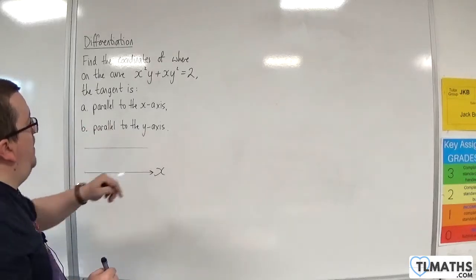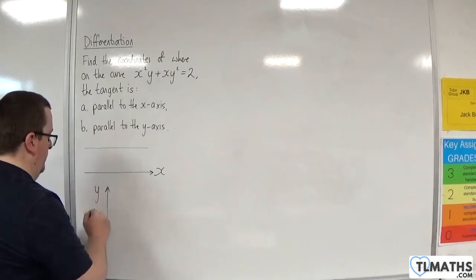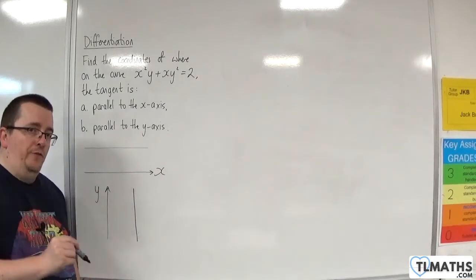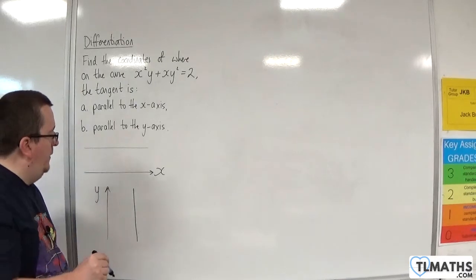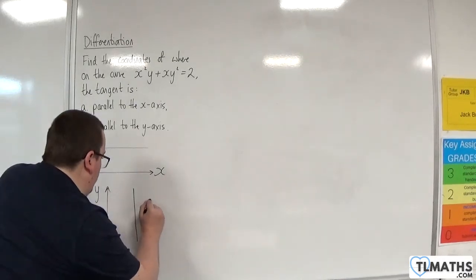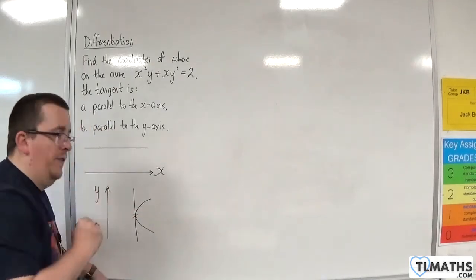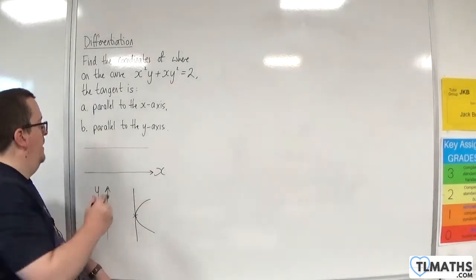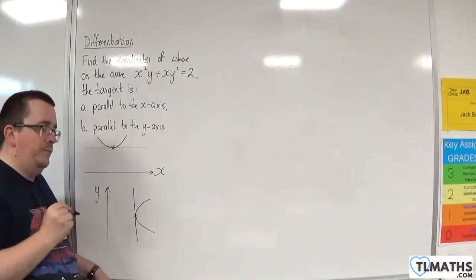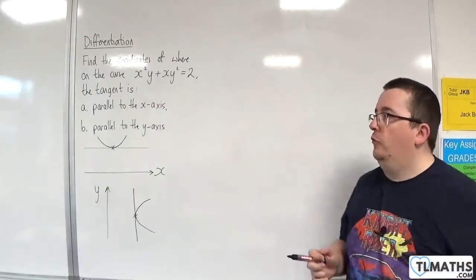And then if it is parallel to the y-axis, then the gradient is infinite, in which case it would look something like this - the curve comes in and does that. So we're looking for that point there, whereas here we're looking for maybe something like that. Just so that we're clear on what we need to be looking for here.